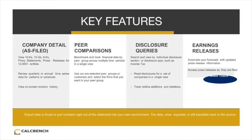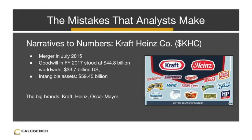Let's pivot back to Jason Voss and his three points about financial analysis. The first one was about connecting numbers and narratives, and here the example we wanted to use is Kraft Heinz. As most people listening probably know, Kraft Heinz is the result of a giant merger that closed in 2015 between H.J. Heinz Company and Kraft Foods. At the end of 2017, goodwill for that entire conglomerate was $44.8 billion worldwide. The value of the intangible assets was $59.45 billion — and here we have our picture of some of those assets, the intangibles up on your screen: Kraft, Heinz, Oscar Mayer, and a few other brand labels.